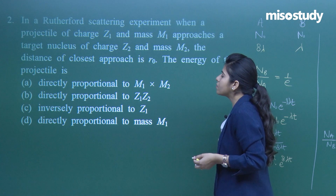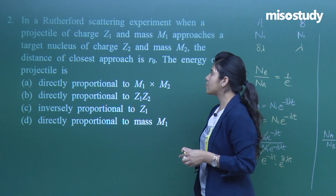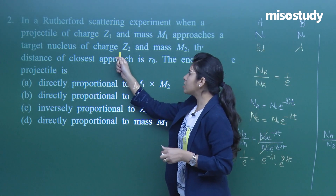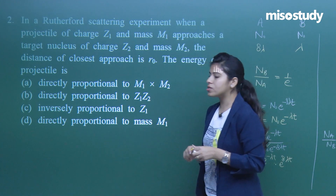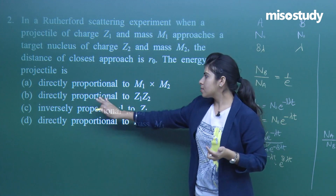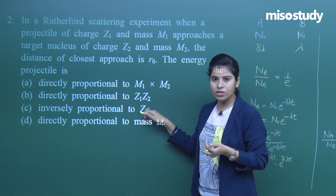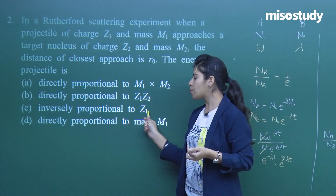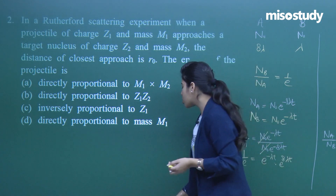Question 2: In a Rutherford scattering experiment, a projectile of charge Z1 and mass M1 approaches a target nucleus of charge Z2 and mass M2. The distance of closest approach is R0. The energy of the projectile is: (A) directly proportional to M1 times M2, (B) directly proportional to Z1 times Z2, (C) inversely proportional to charge Z1, or (D) directly proportional to mass M1.